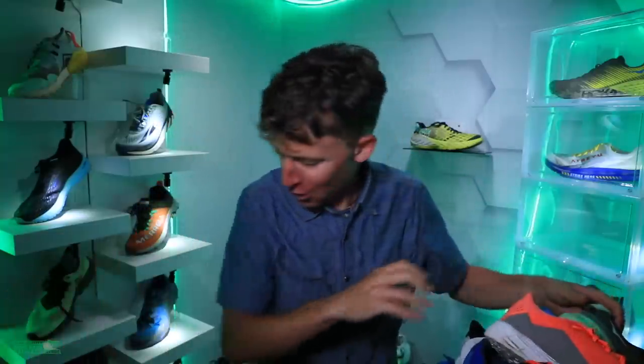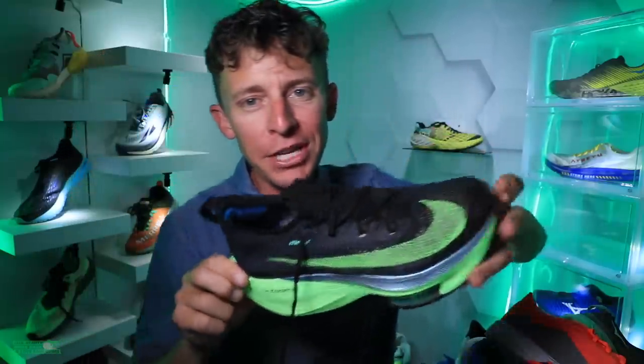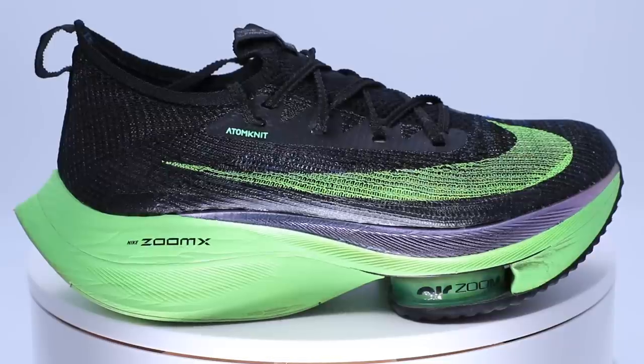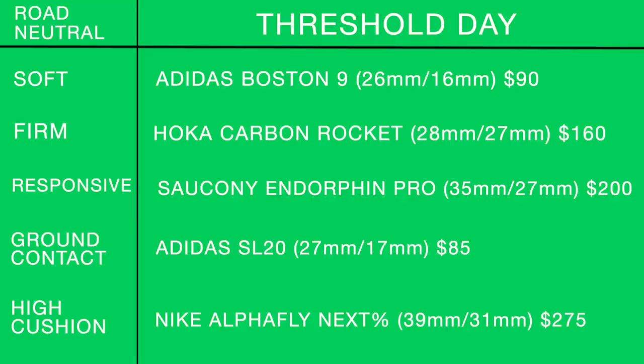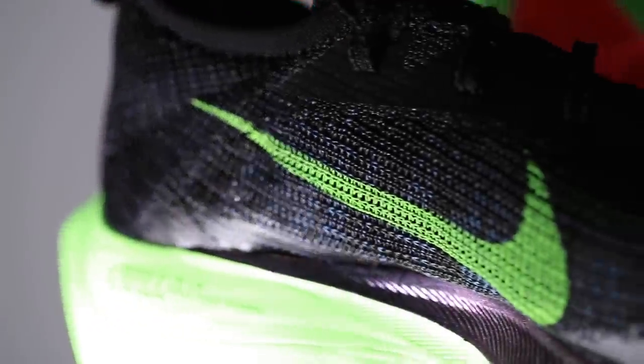For threshold high cushion, it has to be the Nike Alphafly Next%. The stack height is high — I'm going with 39mm in the heel, 31mm in the forefoot, 8mm drop. This is a racing shoe, and I personally will save it for race days rather than threshold training days. $275.